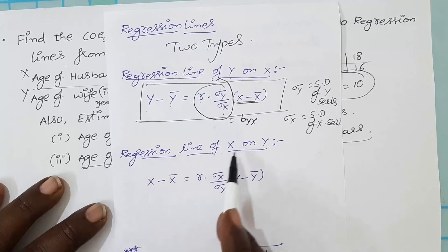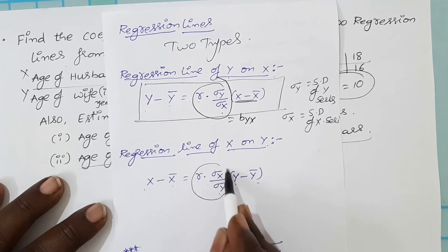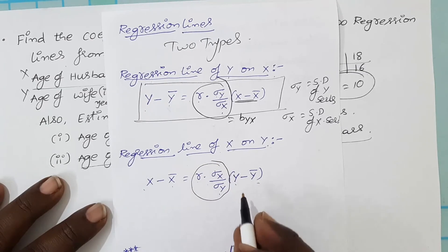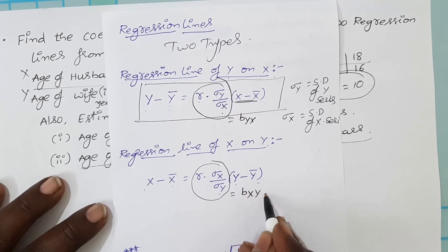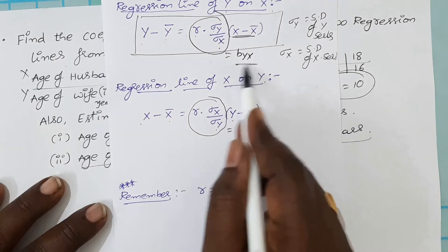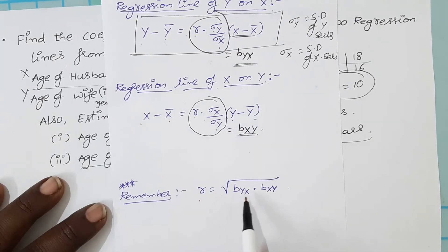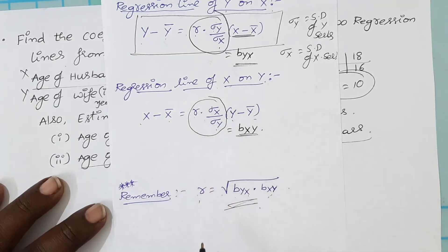The regression line of x on y is: x − x̄ = r·(σx/σy)·(y − ȳ). The term r·(σx/σy) is called the regression coefficient of x on y, denoted by b_xy. One more important relation between the correlation coefficient and the regression coefficients is: r = √(b_yx × b_xy), meaning r is the geometric mean of b_yx and b_xy.